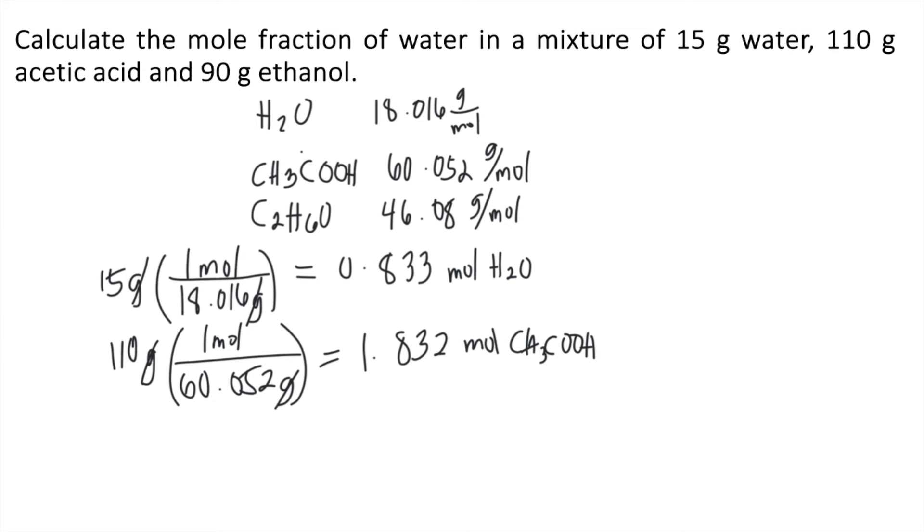Lastly, we have ethanol. In the problem, there's 90 grams of ethanol. Using the molar mass of ethanol, one mole is equivalent to 46.08 grams. So 90 divided by 46.08, that's approximately equal to 1.953 moles of ethanol, or C2H6O.